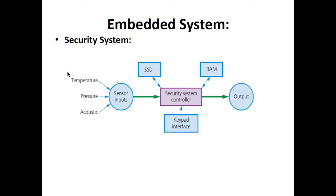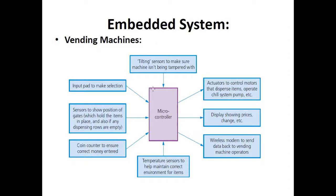In a security system, the inputs are sensors — temperature, pressure, acoustic, light, infrared, or whatever type of sensor the system uses. There is an SSD to record activities and RAM to run the system, along with a keypad interface to activate or deactivate the security system. The output in a security system is usually an alarm or flashing lights that are turned on.